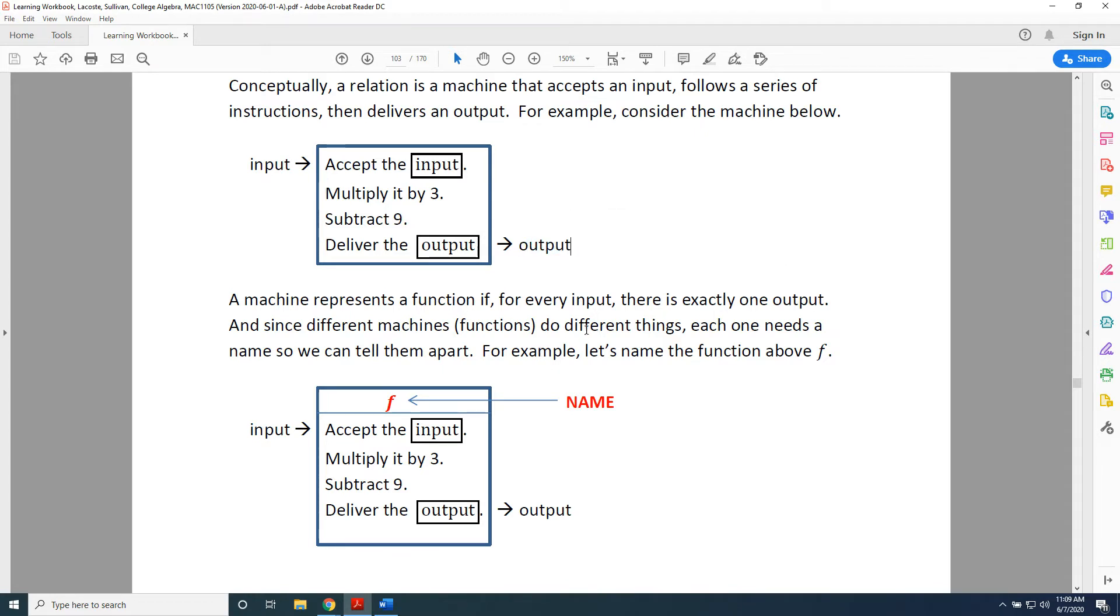A machine represents a function if, for every input, there is exactly one output. And since different machines, i.e. functions, do different things, each one needs a name so we can tell them apart. For example, let's name the function above f, f for function, shown here.